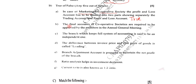Next: The final accounts of a cooperative society are required to be approved by the members in the annual general meeting. The final accounts like profit and loss account and balance sheet of the cooperative society are to be approved by the members in the annual general meeting. Hence this statement is true.